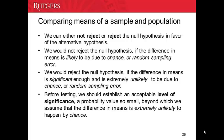We can either reject or not reject the null hypothesis to support the alternative hypothesis. Some people say we can accept or reject the null hypothesis, but technically we do not say we accept the null hypothesis. Even though there is no significant difference between the sample mean and the population mean, the sample is probably close to the population mean, but we cannot say the sample mean equals the population mean. So we say we do not reject the null hypothesis. We would not reject it if the difference in the mean is likely due to chance or random sampling.